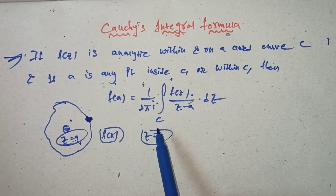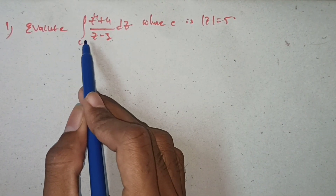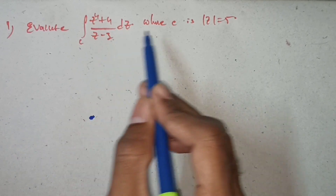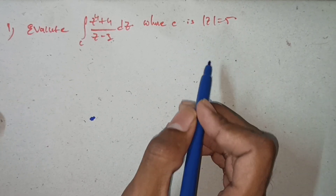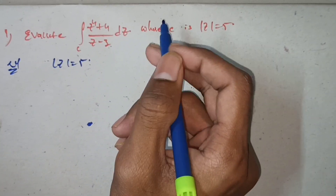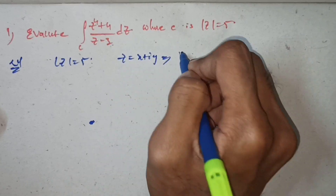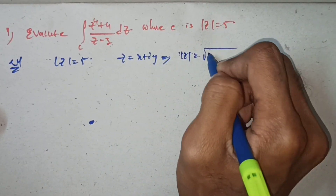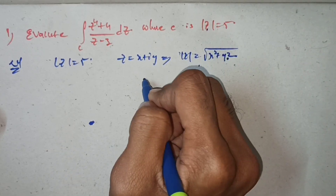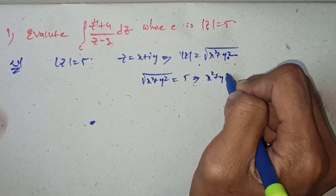Here, z minus a is not equal to zero since z ≠ a inside C. The modulus |z| is equal to the square root of x² + y². So |z| = √(x² + y²).